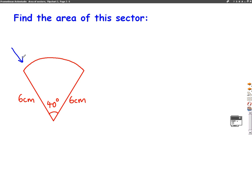So this question asks us to find the area of this sector. There are some things we know about this sector. Firstly, the angle of the sector is 40 degrees, and the sides here are both 6 centimeters. These are the radius of the circle.